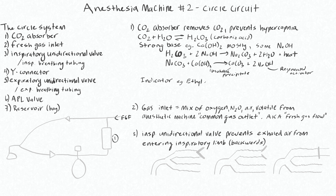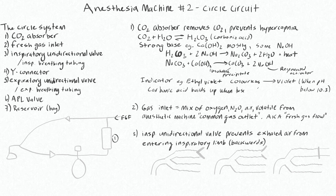A CO2 indicator dye is added to the CO2 absorber to show how exhausted it is — this is often ethyl violet. It is usually colorless at high (basic) pH and becomes violet or purple when the pH drops. The indicator threshold is pH 10.3, so when pH goes below 10.3 you will see it turning violet. This happens because when carbonic acid builds up, it makes the environment more acidic, and that builds up when there is no more base left to convert it — meaning the base absorber is used up.